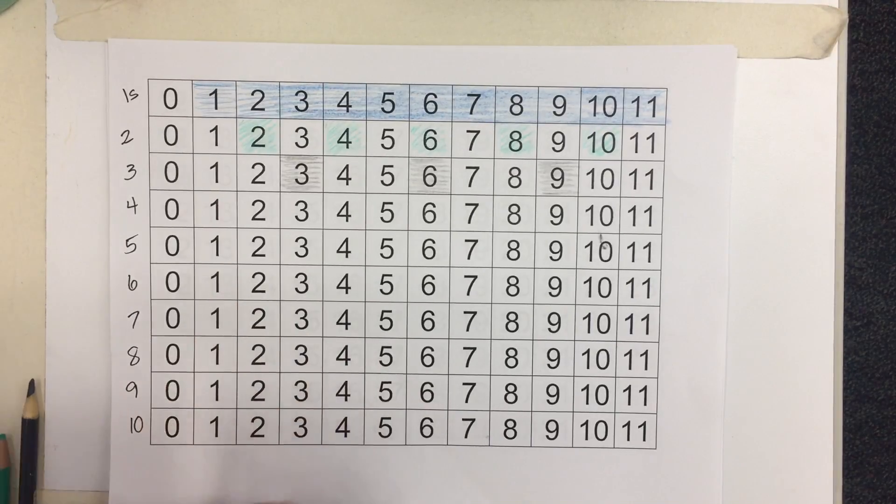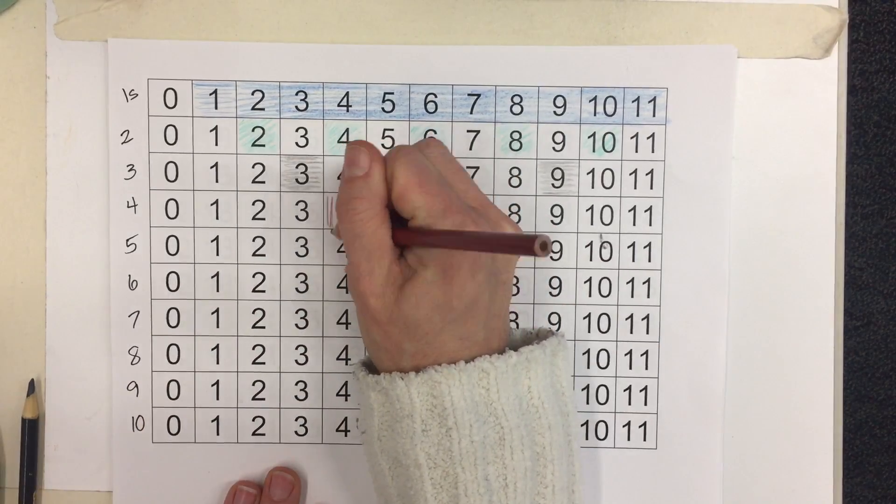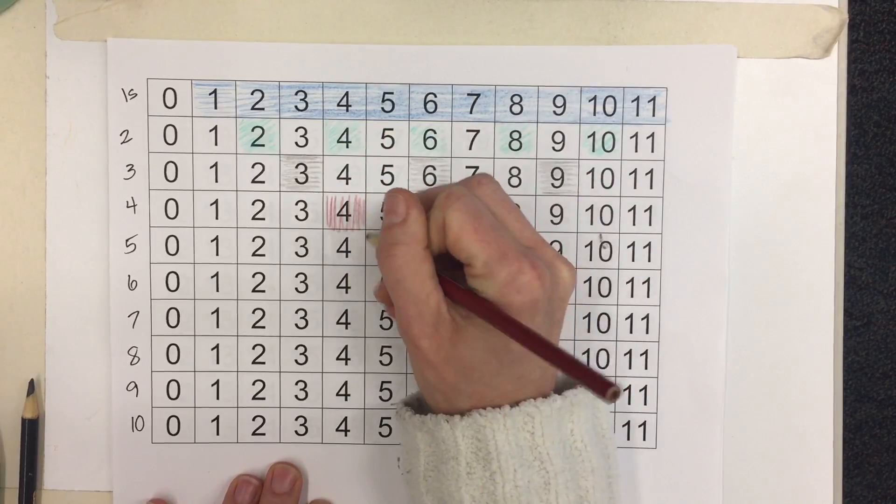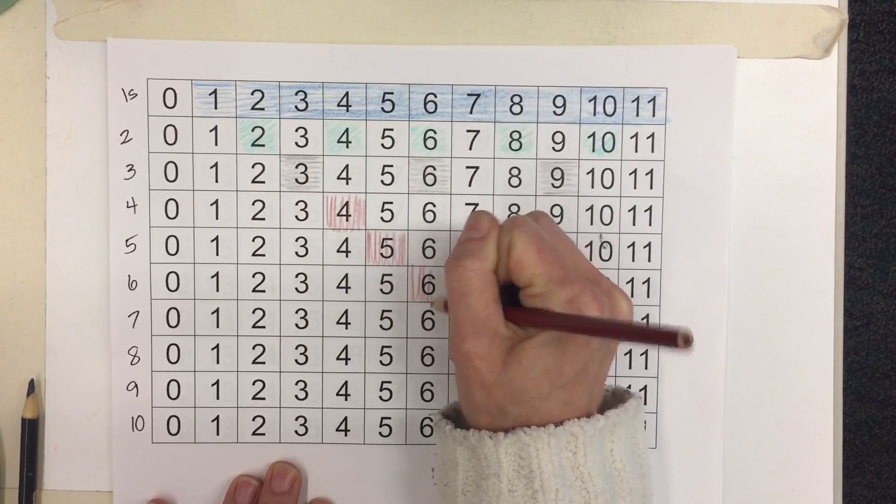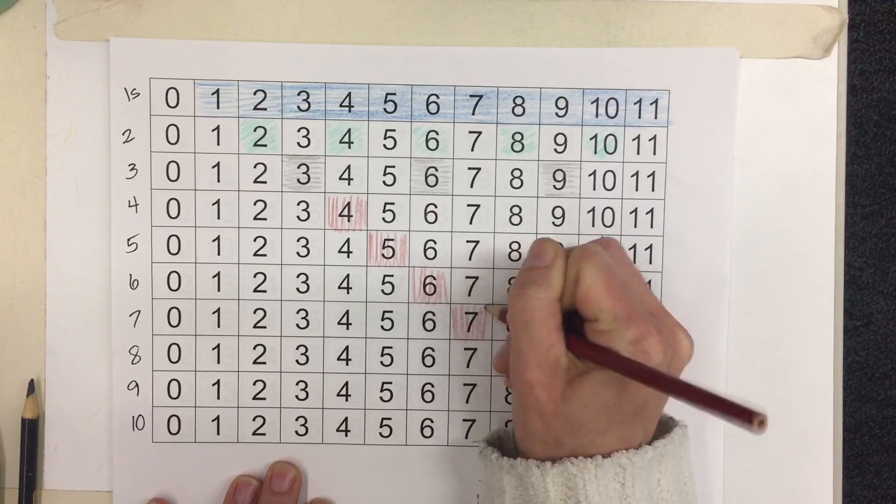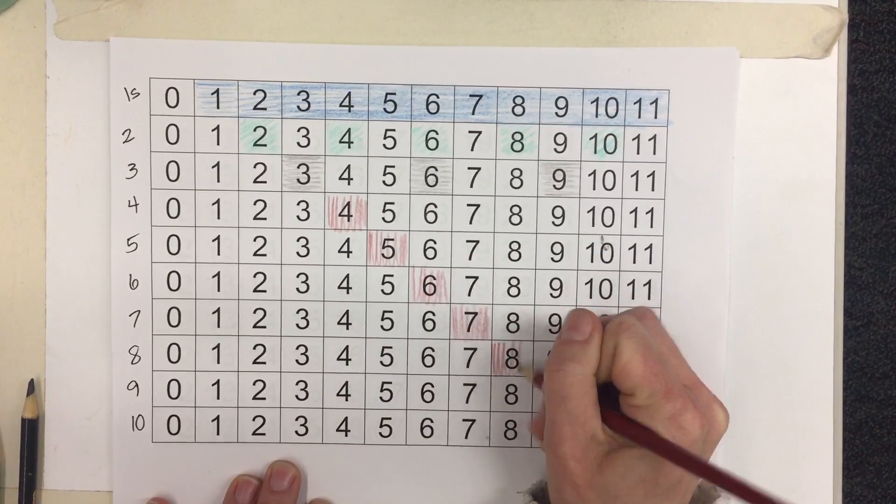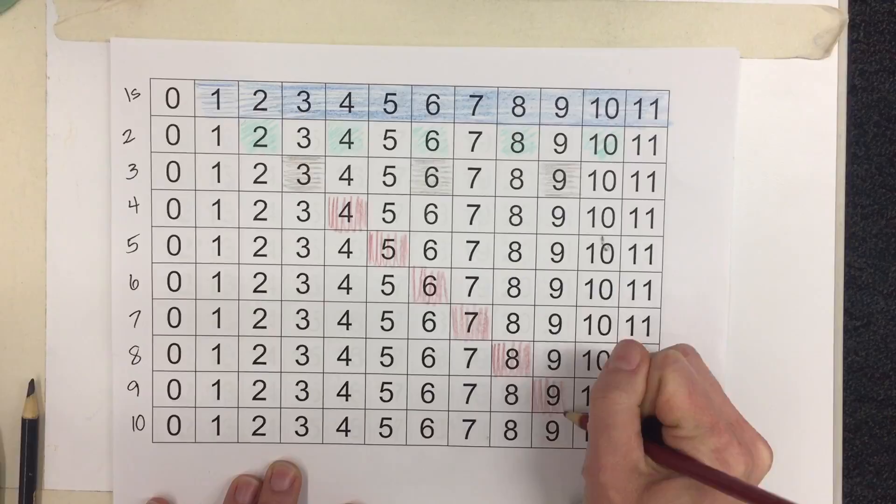So you'll keep going starting this row with 4, the next one with 5, the next one with 6, the next one with 7. You'll want to use different colors but I'm just showing you the next ones: 8, 9 and 10.